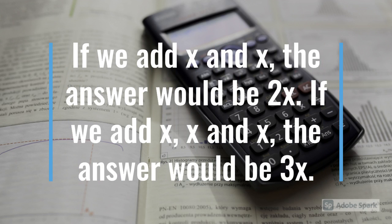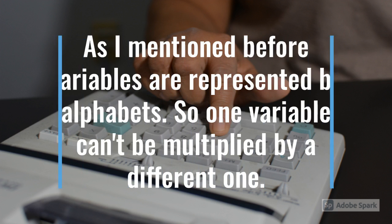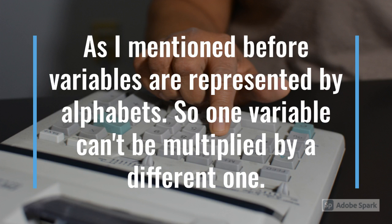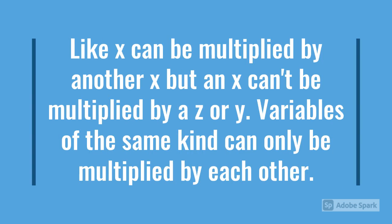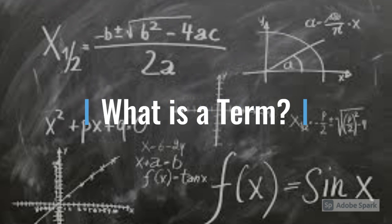If we add x and x, the answer would be 2x. If we add x, x and x, the answer would be 3x. As I mentioned before, variables are represented by alphabets. So one variable can't be multiplied by a different one. Like x can be multiplied by another x which would be 2x. But an x can't be multiplied by z or y. Variables of the same kind can only be multiplied by each other.